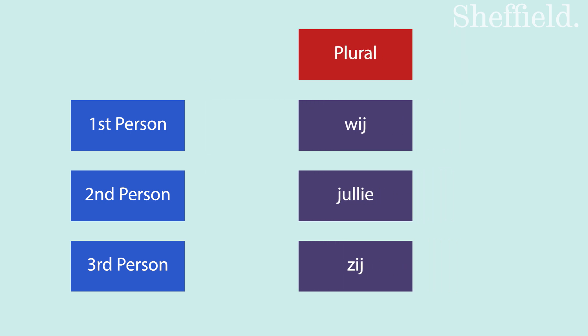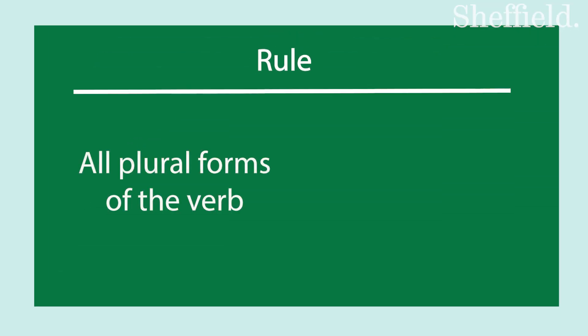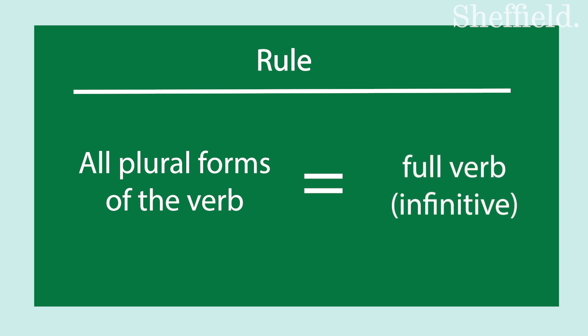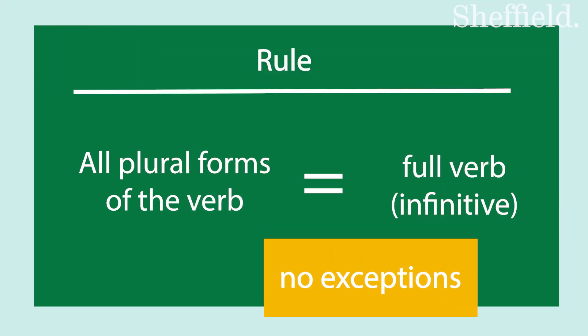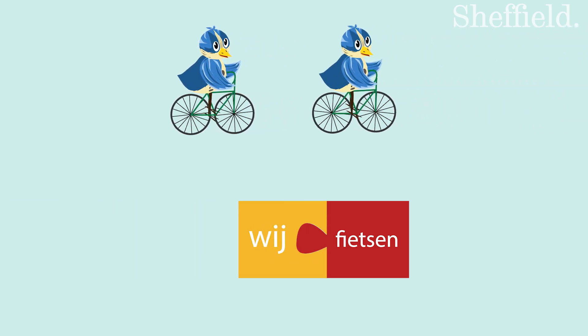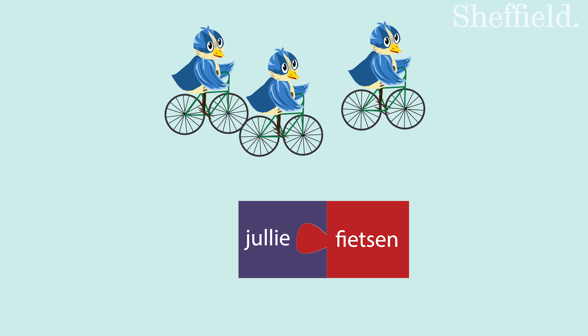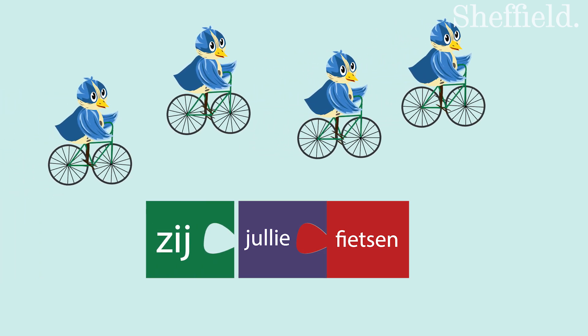Let's get the plural forms out of the way first: wij, jullie, zij. Here is the rule: all plural forms of the verb are the same as the full verb. There is no exception to this rule. So the verb for 'to ride a bike' is fietsen. We ride a bike — wij fietsen. You ride a bike — jullie fietsen. They ride a bike — zij fietsen.